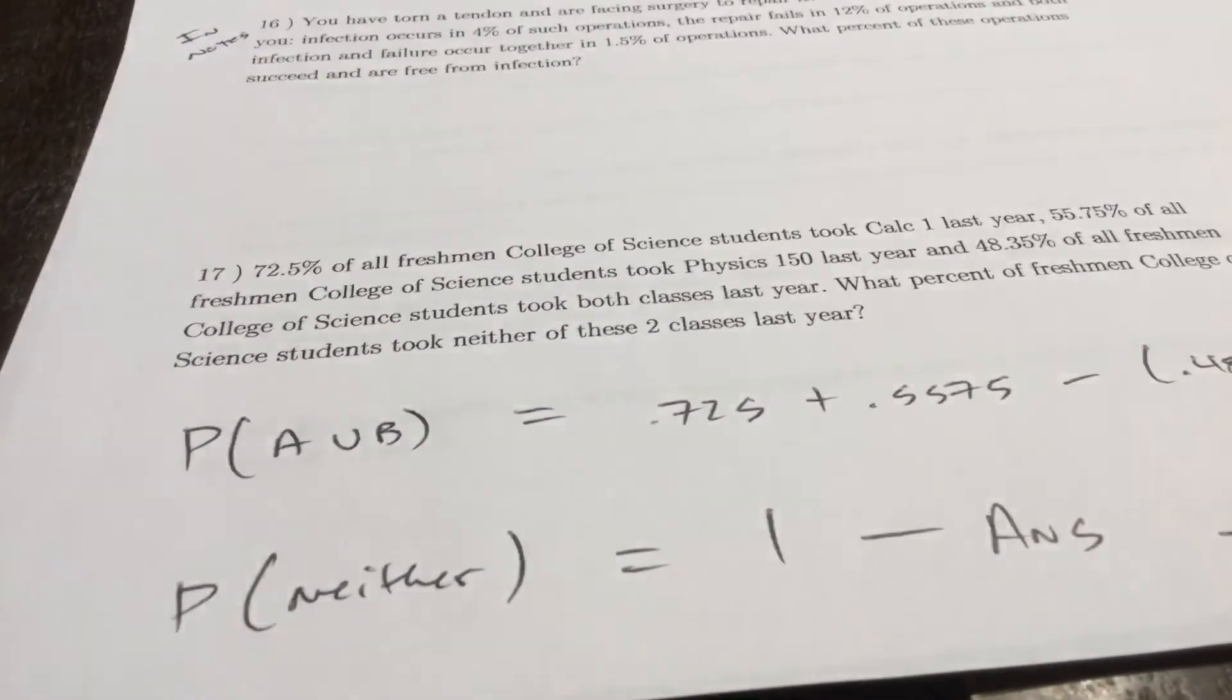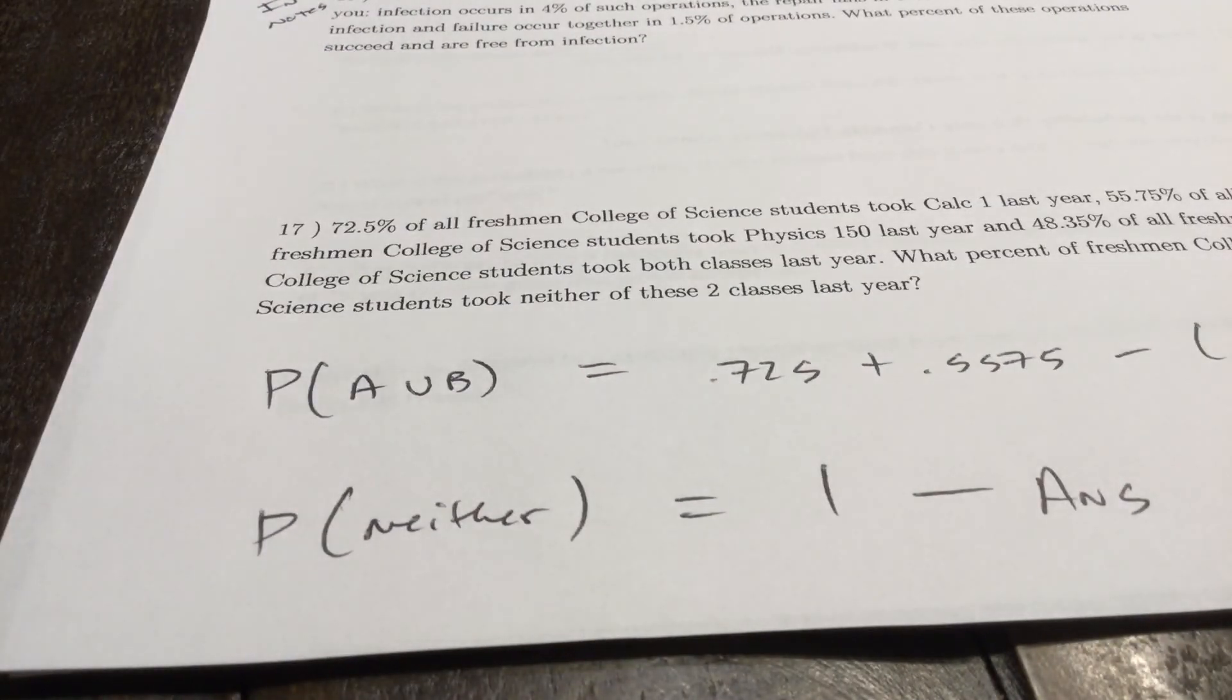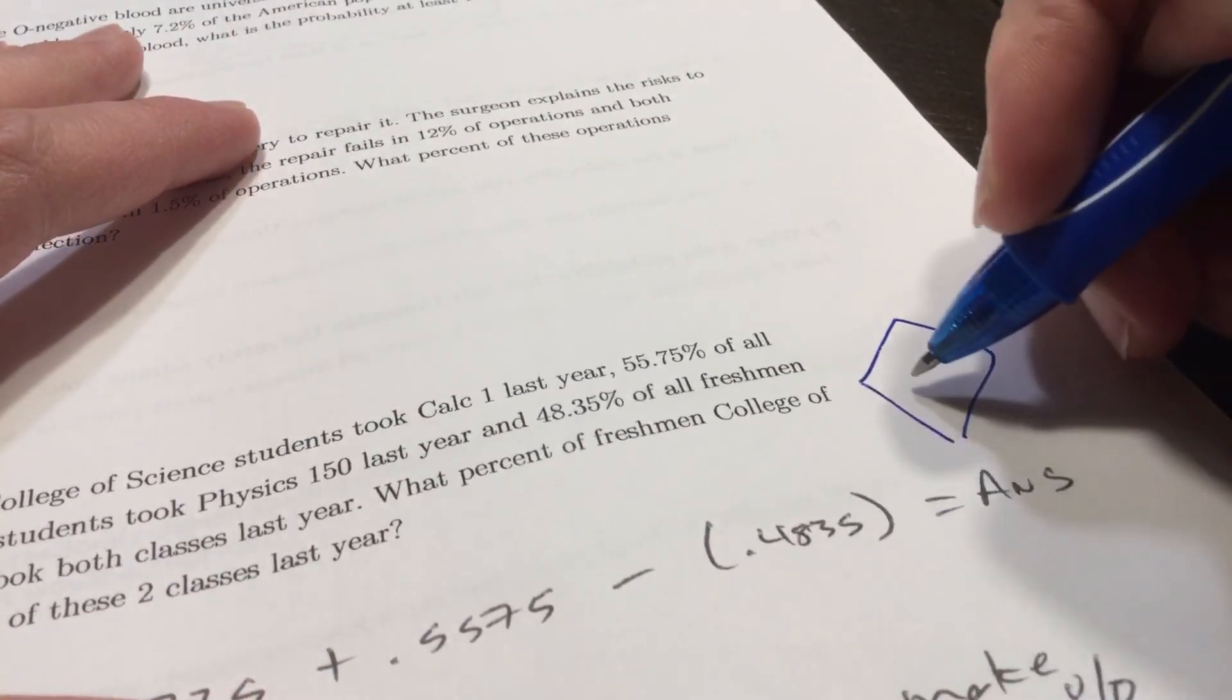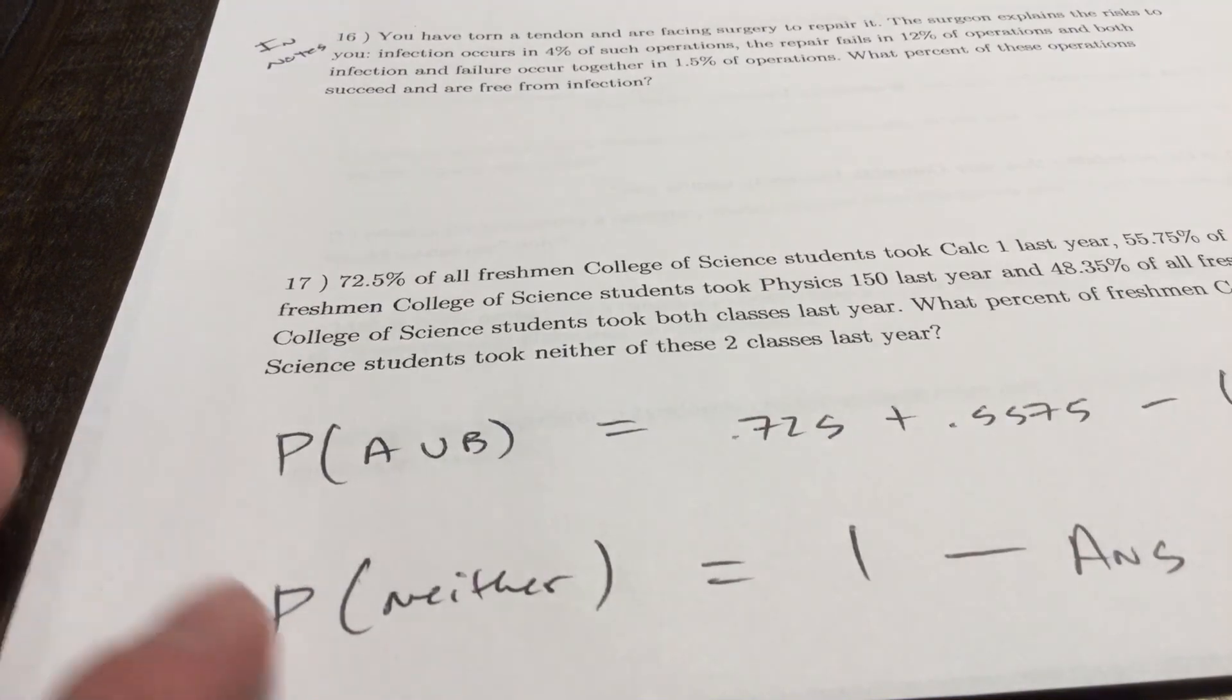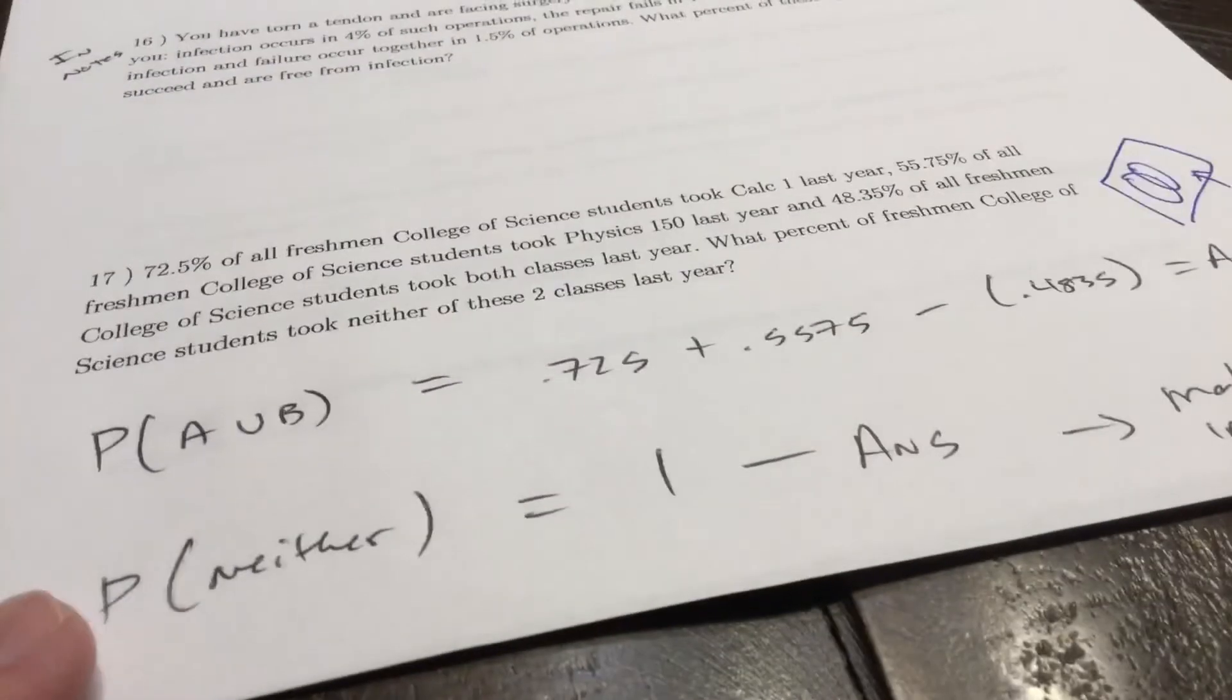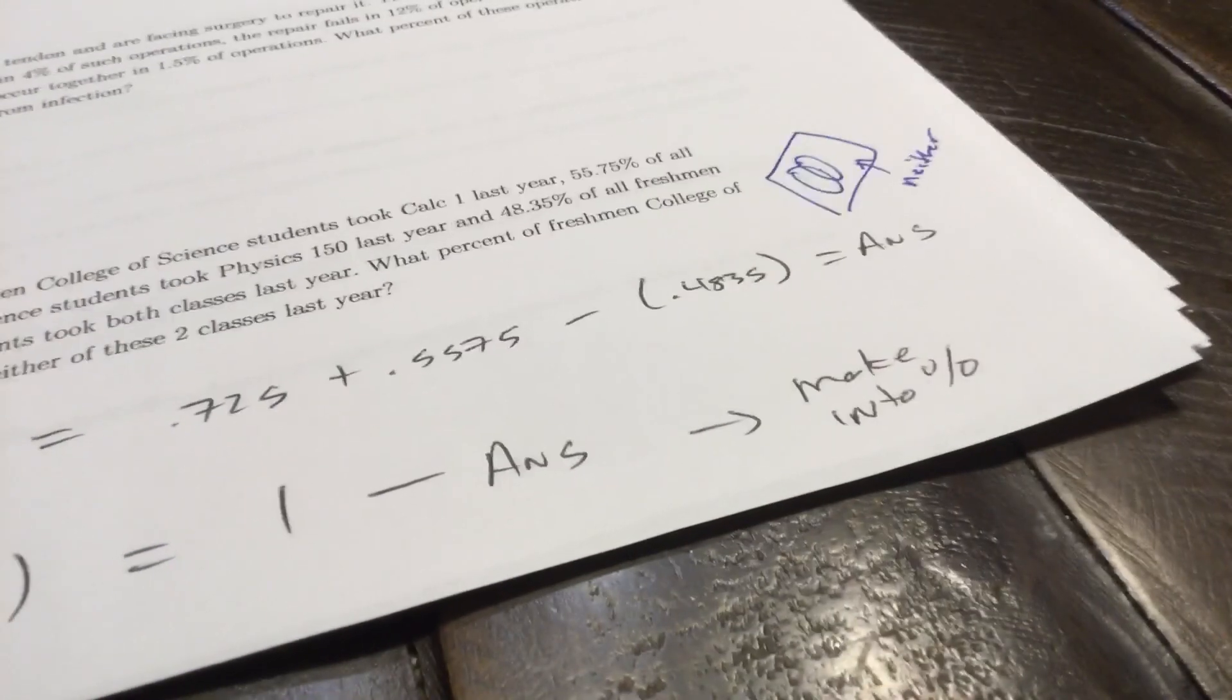You can make a Venn diagram on this or you can do the probability of A union B. 72 and a half percent of all College of Science students took Calc 1 last year. 55.75 percent of all of them took Physics 150 last year, and almost 50 percent of them took both. What percent of freshman College of Science students took neither of these two classes? I've made these into probabilities. If you did a Venn diagram, you would just find what is inside the rectangle. You'd have the intersection, and that's the neither part: one minus that plus that plus that. Here's one way to do it. Let A be the probability they took Calc, let B be the probability they took Physics. The probability they took at least one of the two courses is the probability of A plus the probability of B minus the probability of their intersection. So the probability they took neither of the courses is one minus whatever that answer is, and then make it into a percentage.